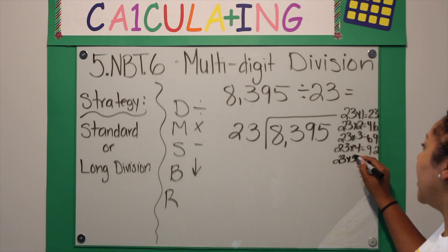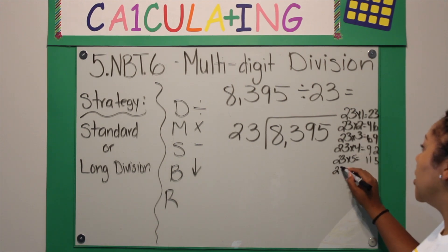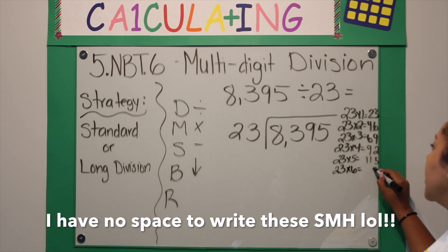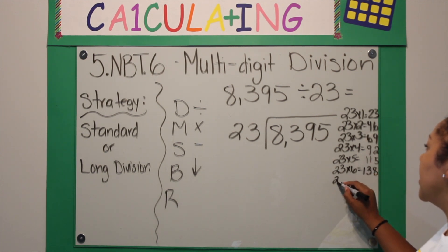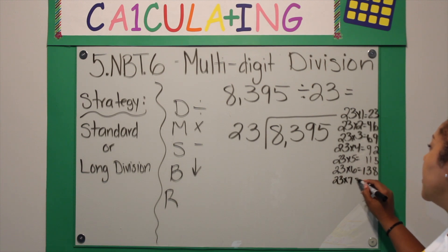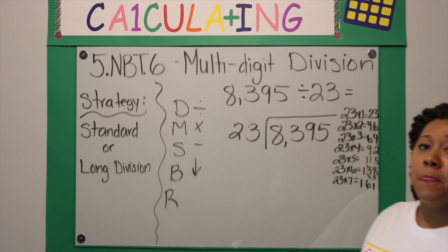23 times 5 is going to be - the 3 plus the 2 is 5, plus the 2 is 115. 23 times 6 is going to be 138. 23 times 7 is going to be, regroup, 161. I'm going to stop there for now.